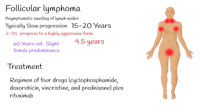The most common chemotherapy used for B-cell non-Hodgkin lymphoma is R-CHOP, which is a regimen of four drugs — cyclophosphamide, doxorubicin, vincristine, and prednisone — plus rituximab.